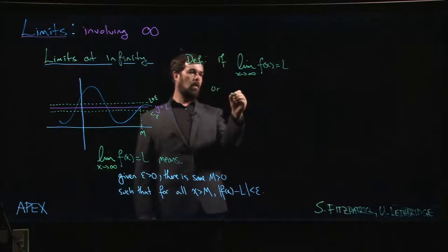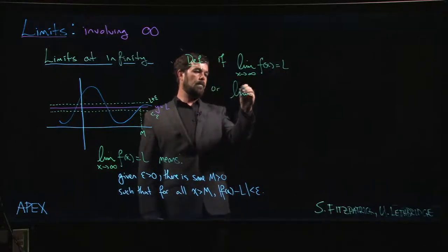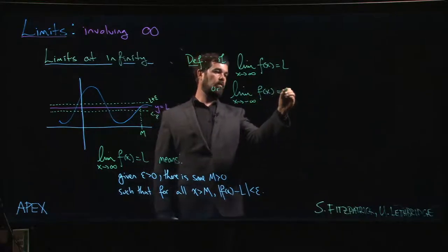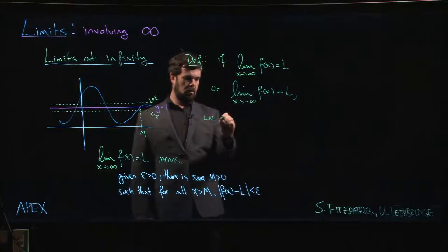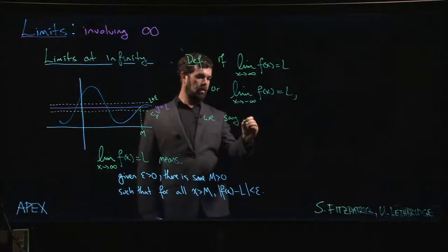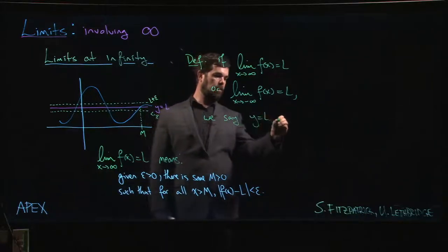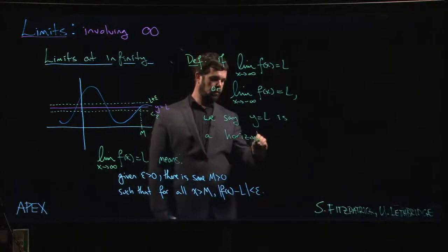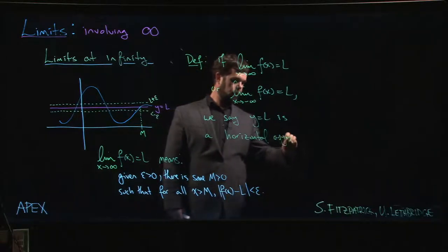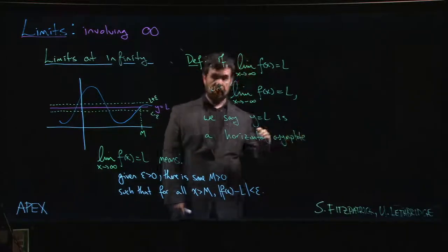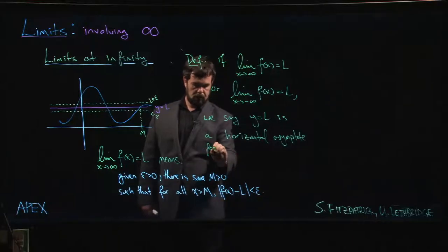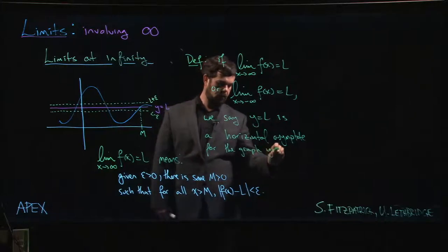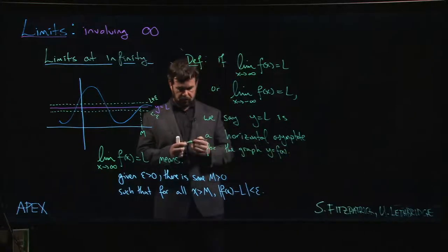or the limit as x goes to minus infinity of f of x equals L, we say that y equals L is a horizontal asymptote for the graph y equals f of x.